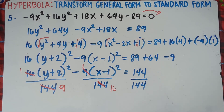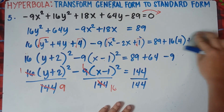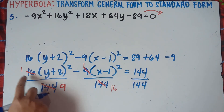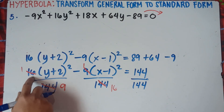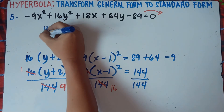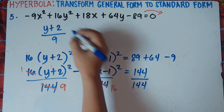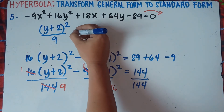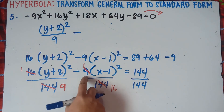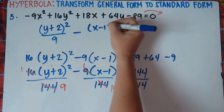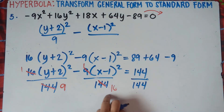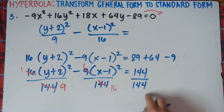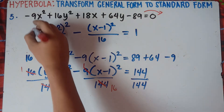Our final answer is: quantity (y plus 2) squared over 9, minus quantity (x minus 1) squared over 16, equals 1. The 1 in front of each binomial is understood so just ignore it. That is the standard form for number 5.